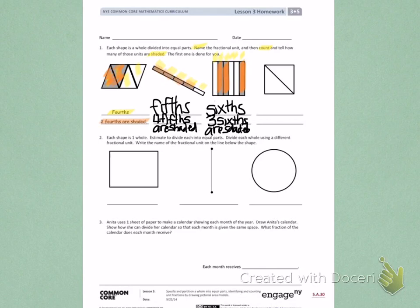Some important things I need to do: I need to estimate to divide equal parts, I need to divide using a different fractional unit, and I need to write the name of that fractional unit.